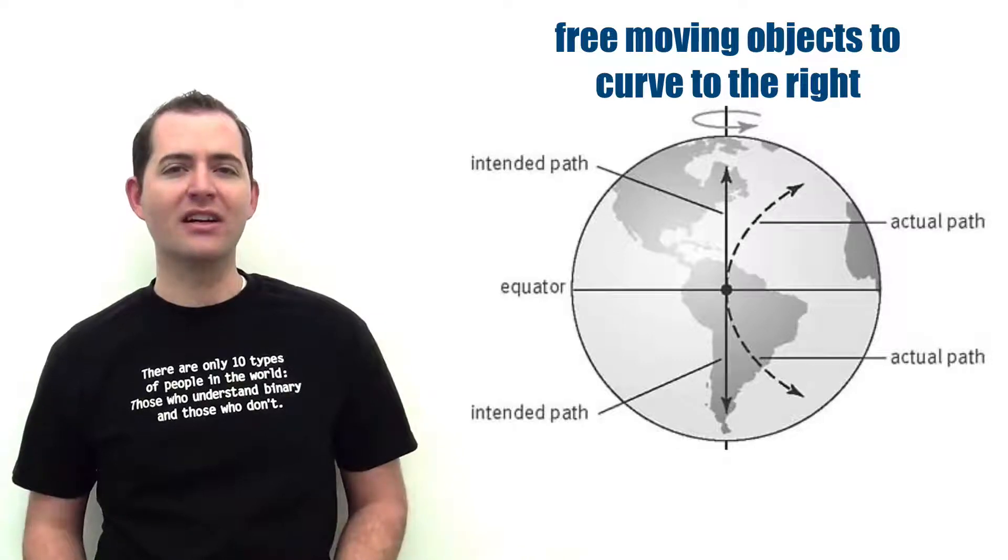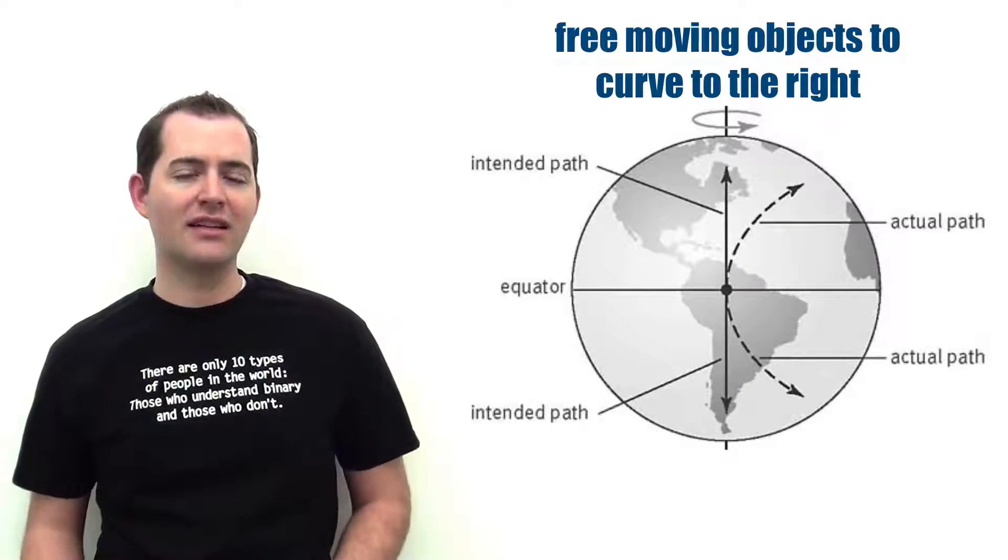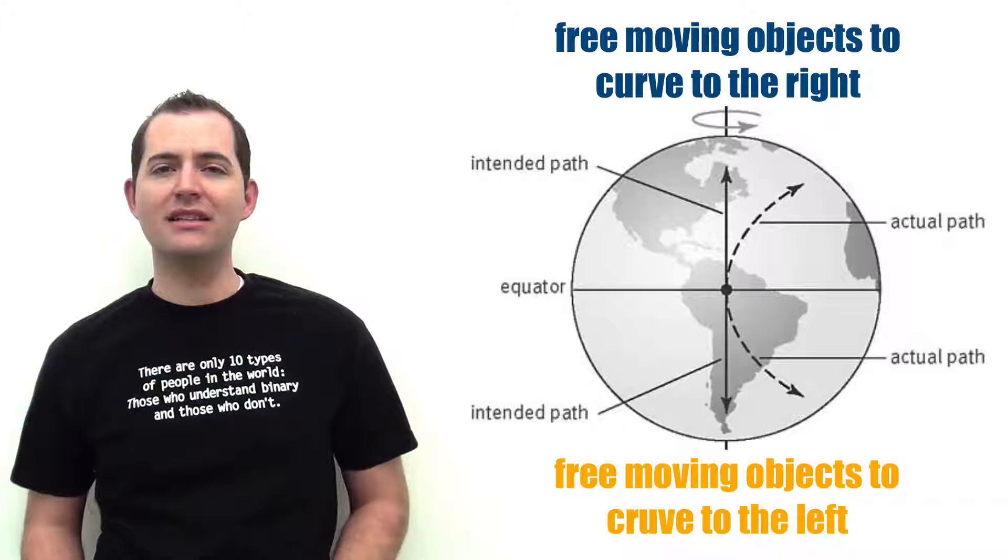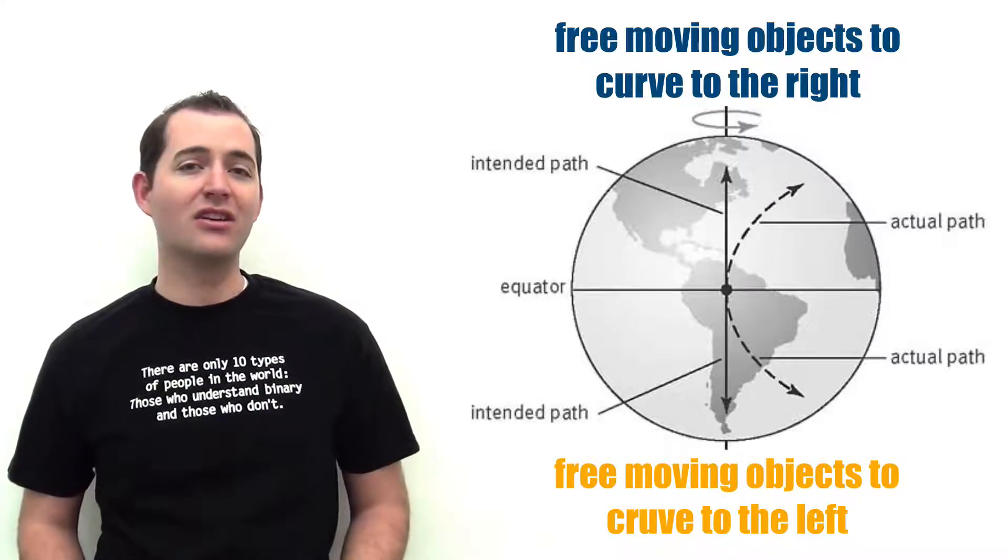The Coriolis effect causes free-moving objects in the Northern Hemisphere to curve to the right and free-moving objects in the Southern Hemisphere to curve to the left.